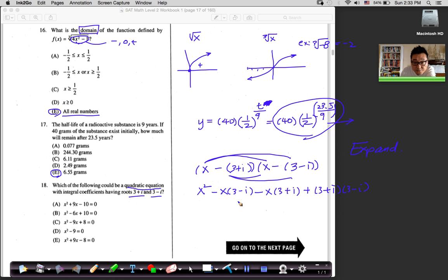Okay, what do I do? Yeah, expand. x squared minus 3x plus xi minus 3x minus xi plus. Now, this is another imaginary complex form that I need to expand. 3 times 3 is 9. Minus 3i plus 3i minus i squared.